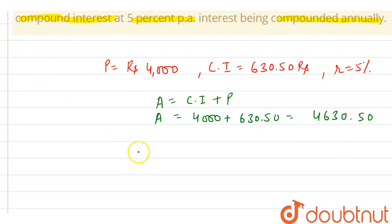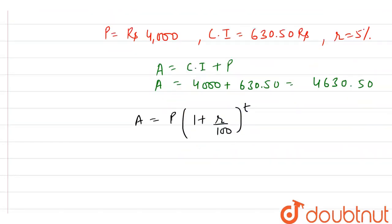We know the formula: A equals P into (1 plus R by 100) raised to power T, where T is time in years. Now, let's put the values. A is 4630.50, which equals 4000 into (1 plus 5 by 100) raised to power T.